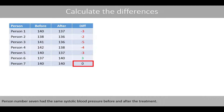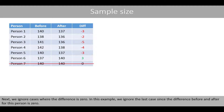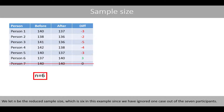Person number 7 had the same systolic blood pressure before and after the treatment. Next, we ignore cases where the difference is zero — in this example, we ignore the last case. We let n be the reduced sample size, which is 6, since we have ignored one case out of the seven participants.